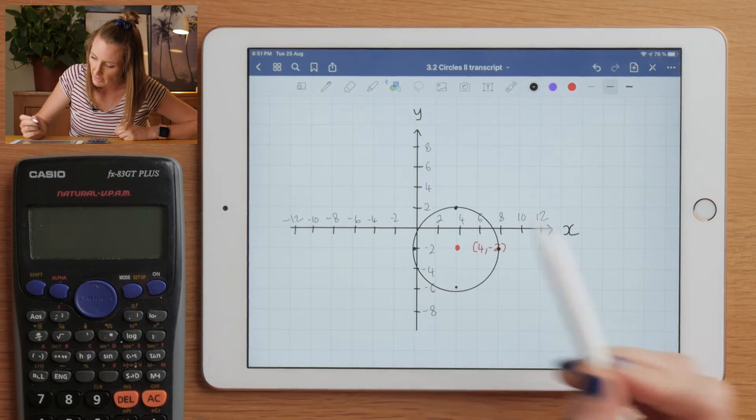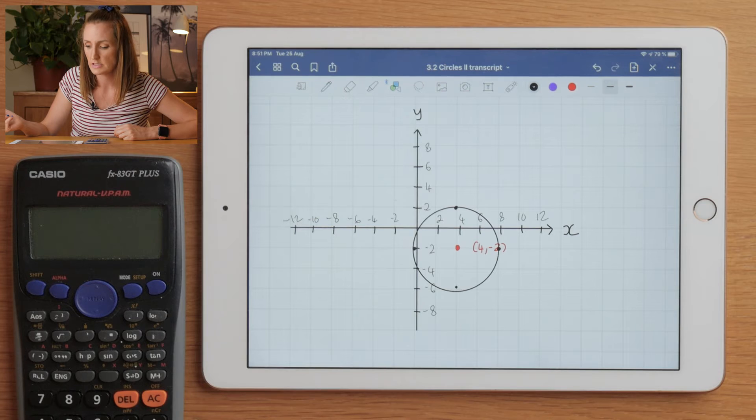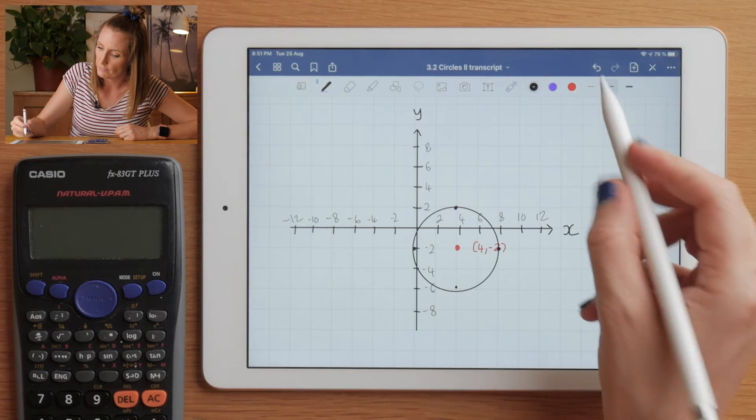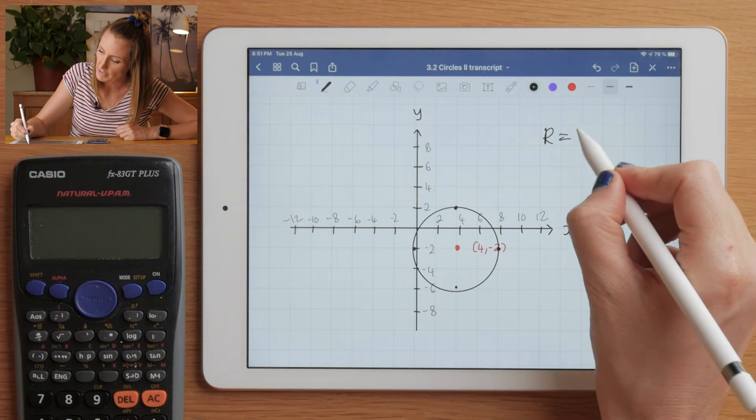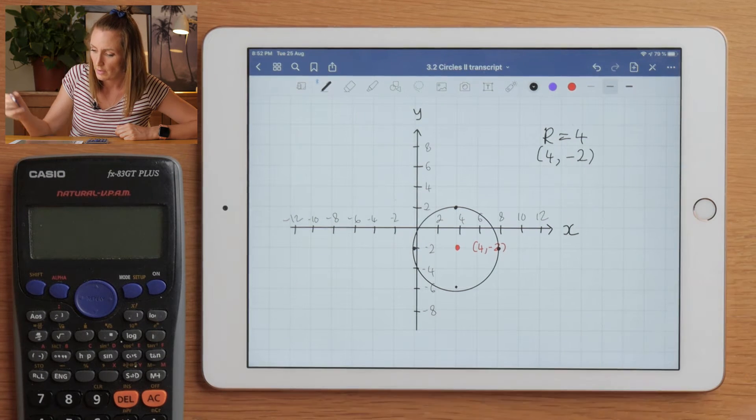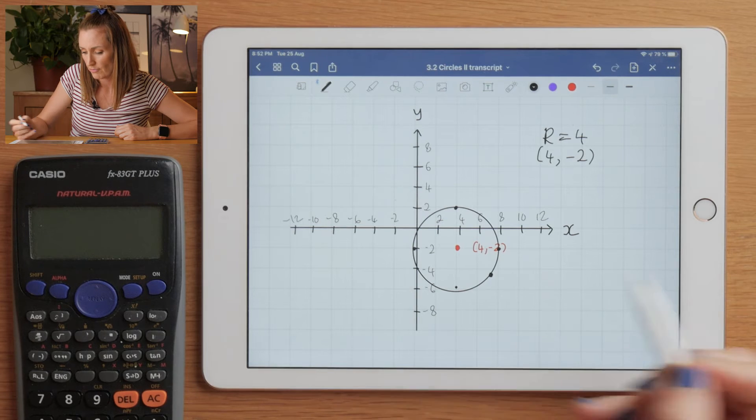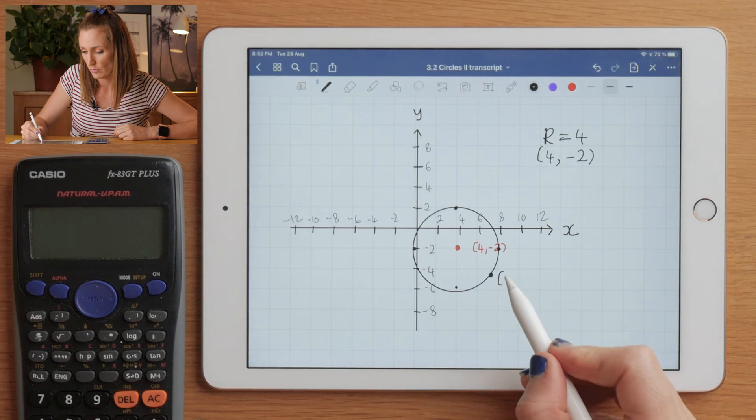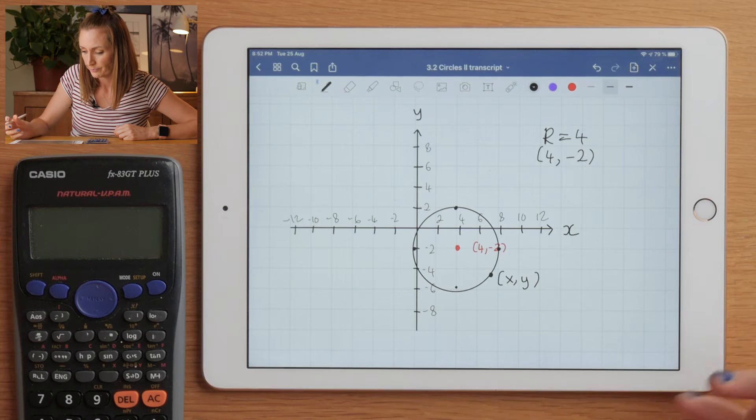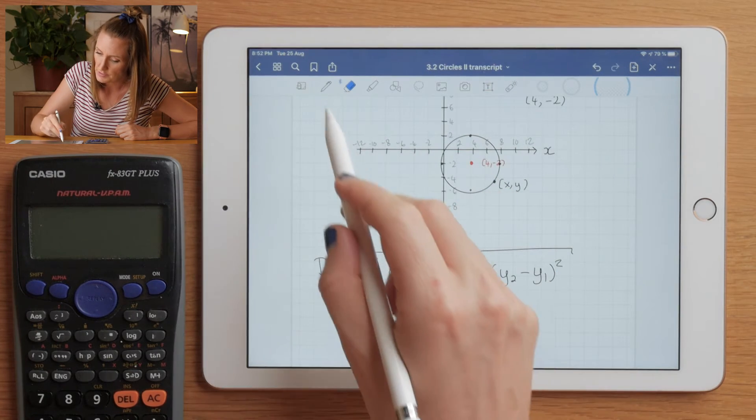Now in this circle, we know that every point needs to be a distance of 4 away from the center. So we know the radius would be 4, we know the center is (4, -2). So what would the equation be? Well, we can call every point on the circumference—like a general point—we can call that (x, y). So what we would do in this instance is we would say